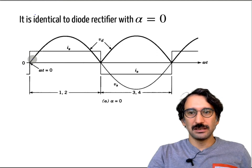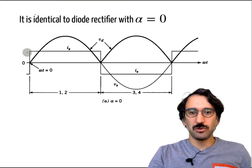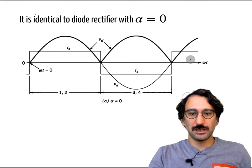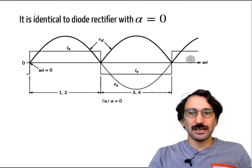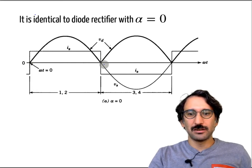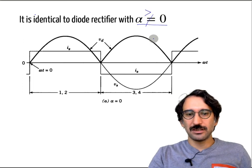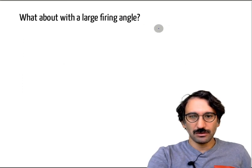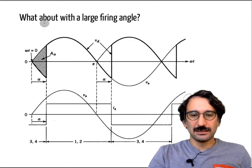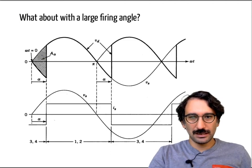When alpha is equal to zero, the output is the same as we discussed with the single-phase diode rectifier. The output voltage is rectified, the input current is like a square waveform, and the output current is an ideal current source — so it is DC. But the output voltage is a rectified signal. The question is: what happens if alpha is not equal to zero but something larger than zero?